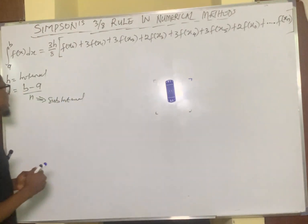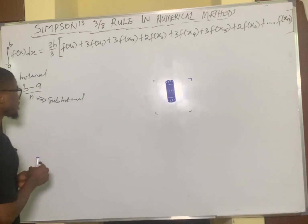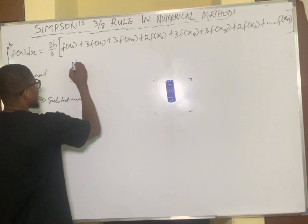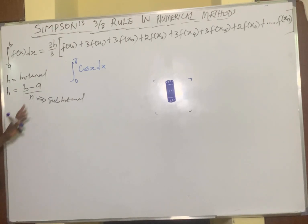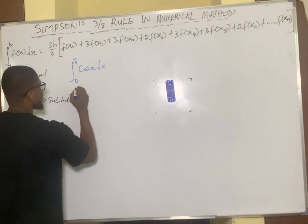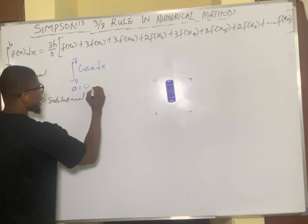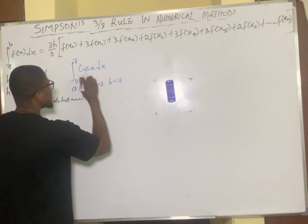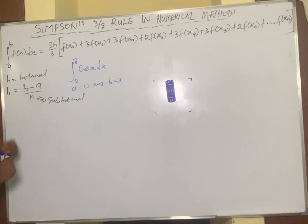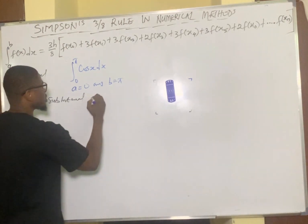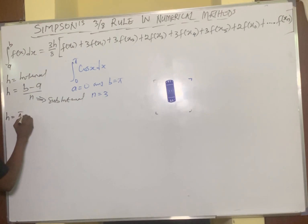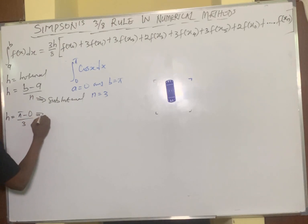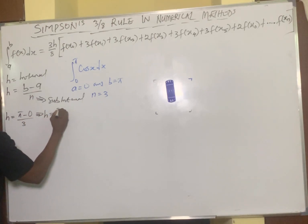Let's pick a simple example to explain this concept. We are carrying out the integral from 0 to π of cos(x) dx using Simpson's 3/8 rule. From this question you can deduce that a equals 0, which is the lower limit, and b equals π, which is the upper limit. We choose n equal to 3. The interval h is equal to (b − a) / n, which is (π − 0) / 3, so h equals π/3.